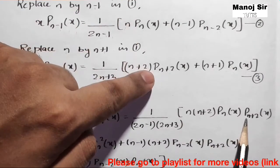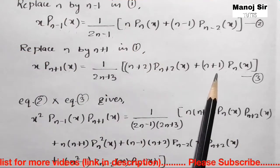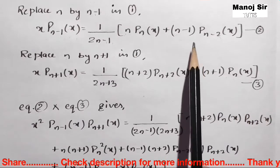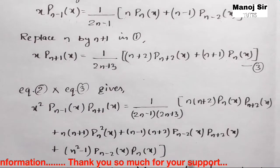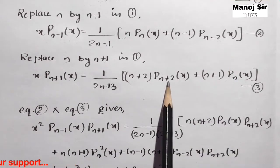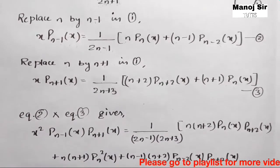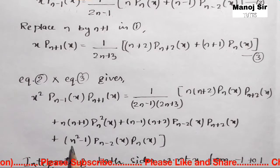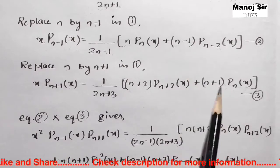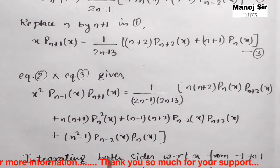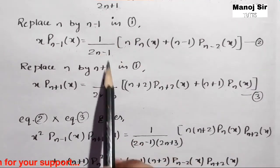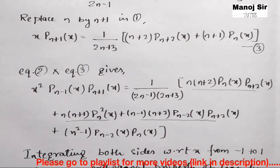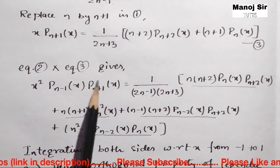The four terms from multiplying are: first, n(n+2)·P_n(x)·P_{n+2}(x); second, n(n+1)·[P_n(x)]²; third, (n-1)(n+2)·P_{n-2}(x)·P_{n+2}(x); and fourth, (n-1)(n+1)·P_{n-2}(x)·P_n(x), which equals (n²-1)·P_{n-2}(x)·P_n(x).